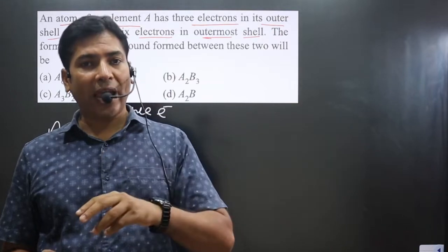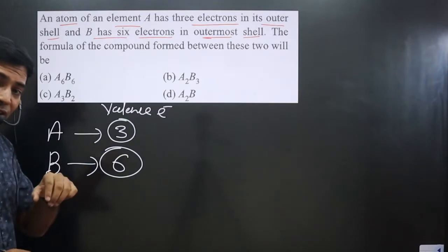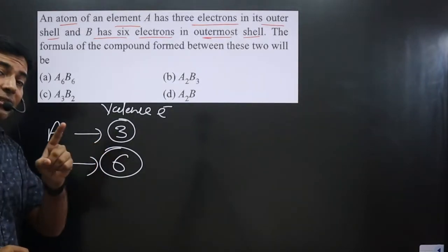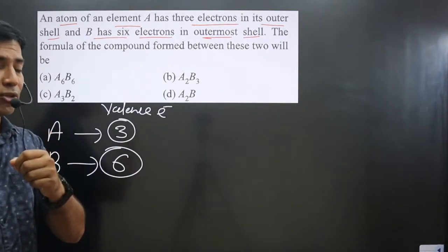So you can see A is having three valence electrons, means it is present in group 13. They have tendency to lose how many electrons? Three electrons.